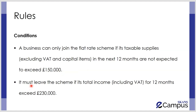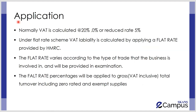Once the scheme is joined, Flat Rate Scheme rules will have to be applied regarding the calculation of output VAT due to HMRC. However, one should note that the scheme has to be disjoined at the point in time where the total income of the business — inclusive of VAT — for the 12 months becomes equivalent to or more than £230,000.